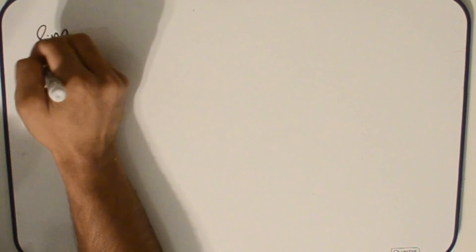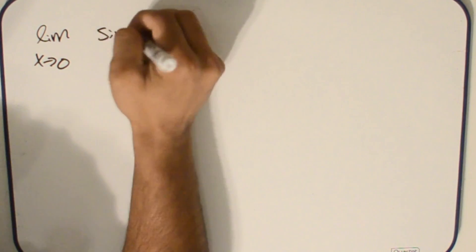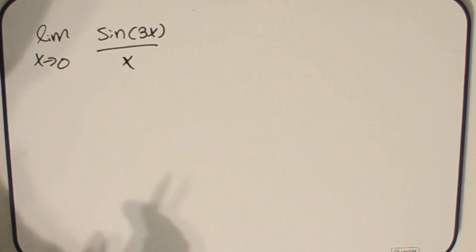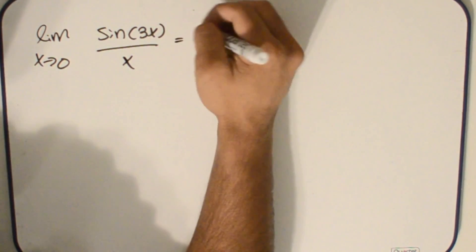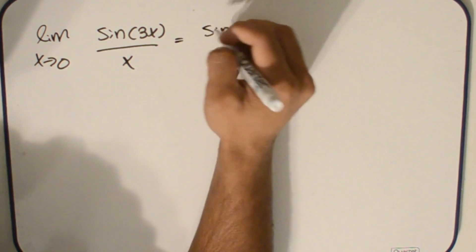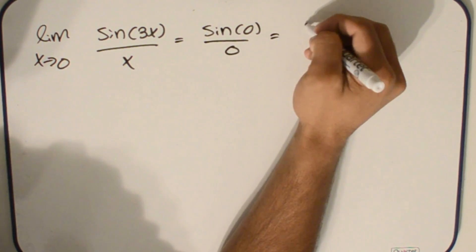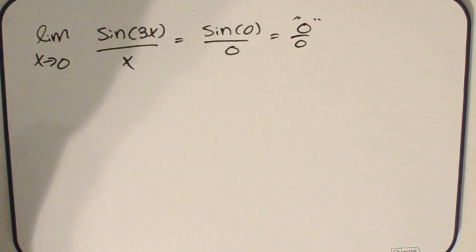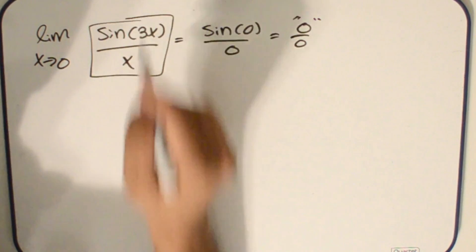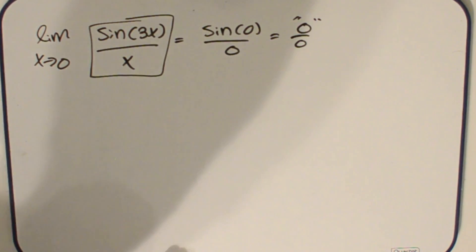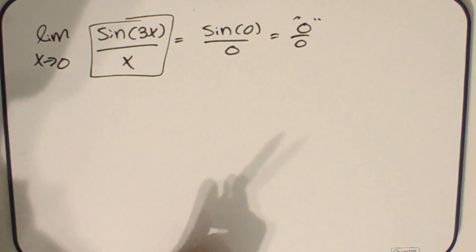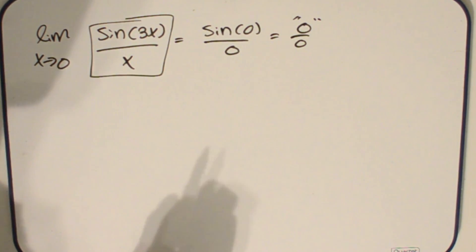Our first problem is the limit as x approaches 0 of sine 3x over x. Like any other problem, the first step is to plug in 0 into the initial expression. We get sine of 0 — since 3 times 0 is 0 — over 0, which is the indeterminate form 0 over 0. This tells us we need to manipulate the expression. Looking at it, we can see this resembles the special case sine u over u as u approaches 0 equals 1.